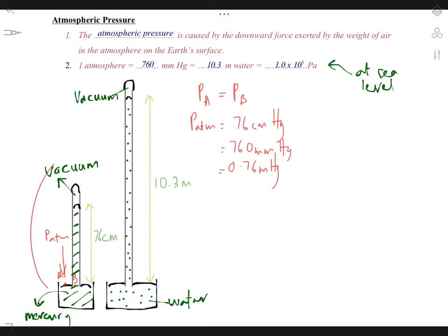Now at point B, sorry, let's say this is point C and this is point D over here. Then we can also write pressure at point C equals pressure at point D because they are at the same level.